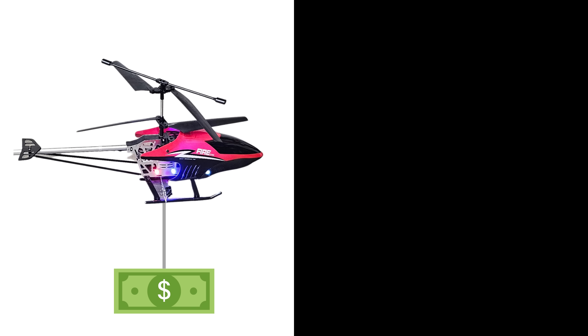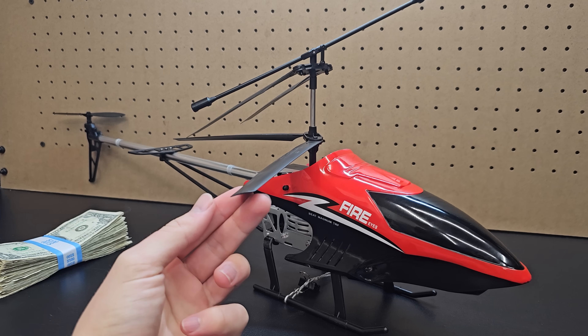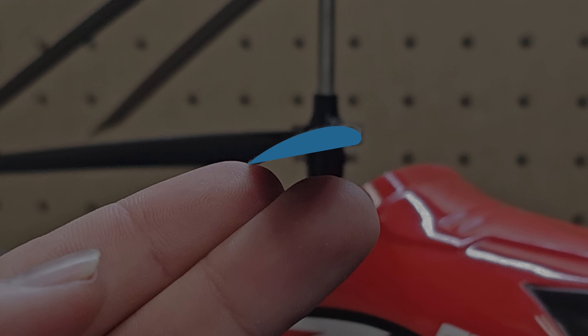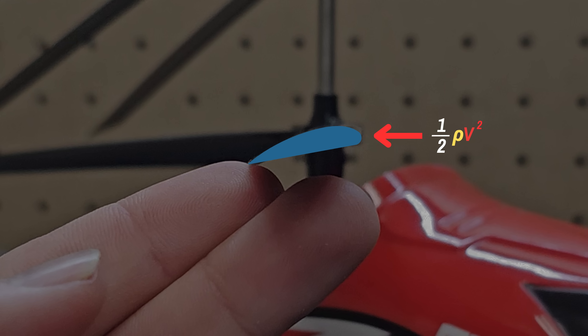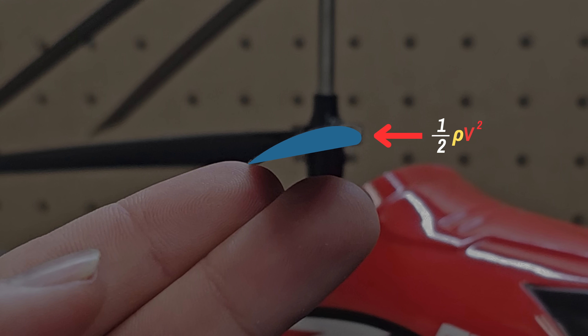The first step to setting this line was estimating the maximum amount of lift the helicopter can produce. To do that, I'll first look at a single blade, and even more specifically, a single cross section of that blade. To estimate the lift force on just this cross section, I first need to know the dynamic pressure of the fluid, which accounts for the type of fluid and its density, and the velocity of the fluid relative to the spinning blade.